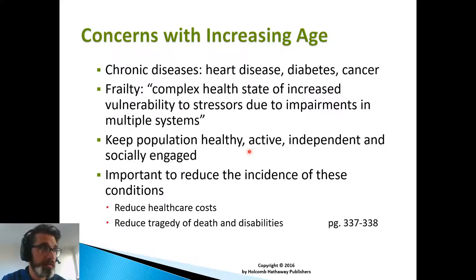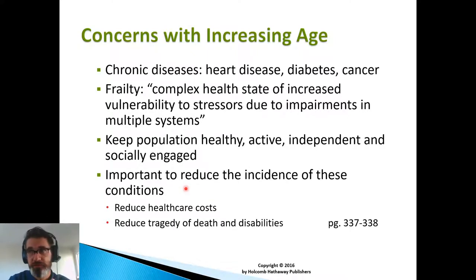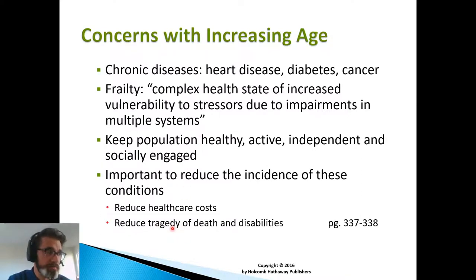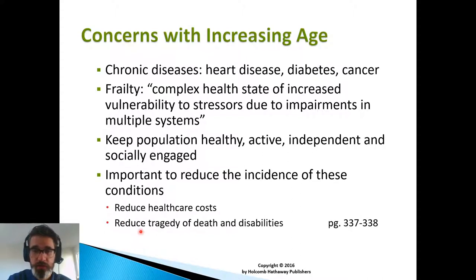But if we can keep the population healthy, active, independent, and socially engaged, we might be able to prevent a lot of these chronic diseases. It's important to reduce the incidence of these conditions for two reasons: to reduce healthcare costs, and to reduce the tragedy of death and disability — so it's really a win-win. The money in the healthcare system can then go towards treating other diseases, and we'll also be able to reduce the overall number of deaths and disabilities we see in this older adult population.